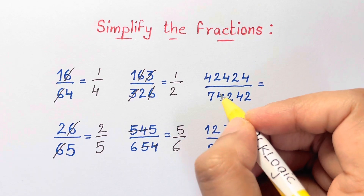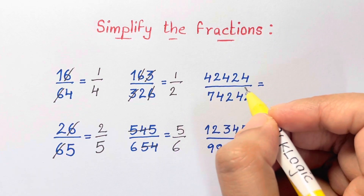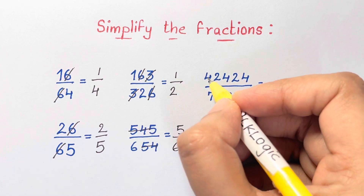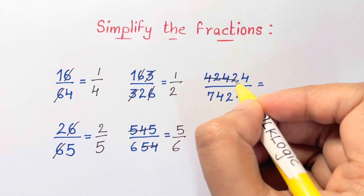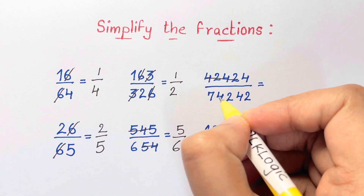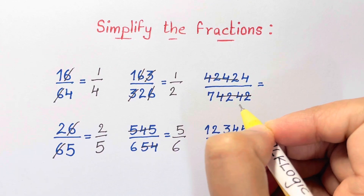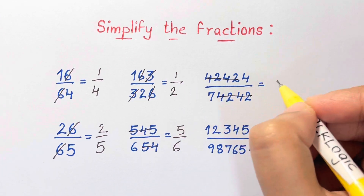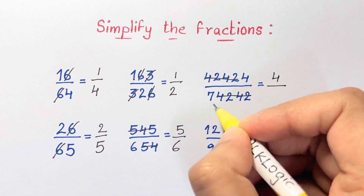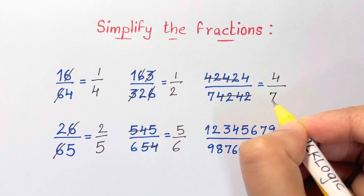For the fifth problem, I looked at the top and I thought, alright, there's a 4242 on the top and a 4242 on the bottom. What remains is 4 over 7.